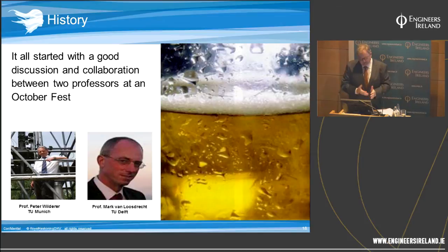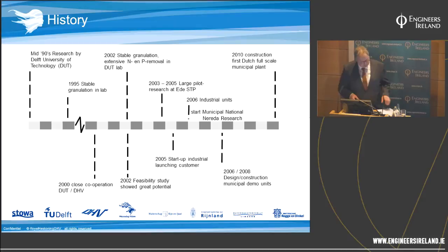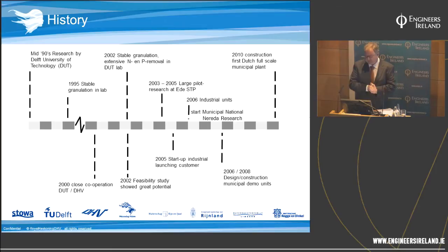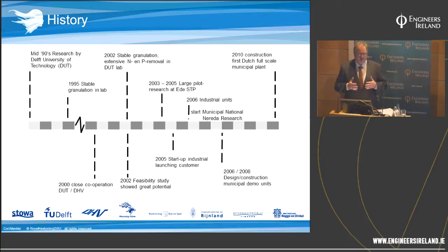How did Nereda start? At the Oktoberfest in Munich, two professors — Professor Wildener and Professor Verstraete — had a wager about who could make aerobic granular sludge first, since anaerobic granular sludge already existed. Research started in the 1990s at Delft University. The first full-scale construction started in 2010 — so they had a long time before they could share that beer. The important thing is the boost that came when research moved out of the university lab into the field through pilot testing at wastewater treatment plants and the first industrial applications.